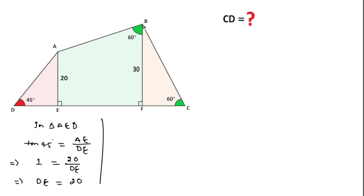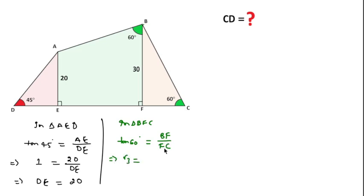Also, in triangle BFC, because this is also a right angle triangle, we use trigonometry: tan60° equals perpendicular BF over base FC. tan60° is √3 and BF length is 30. FC we don't know, so we can write FC equals 30 over √3. Multiplying by √3 over √3, we get FC equal to 10√3.